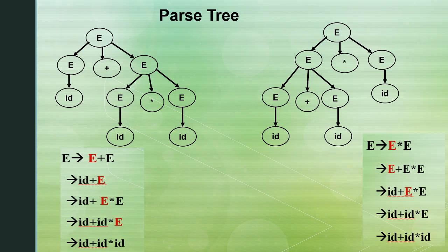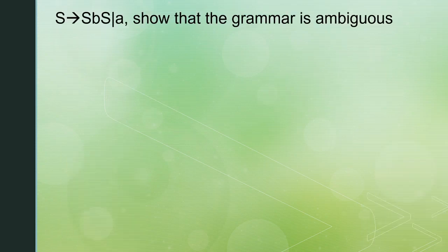Ambiguity in grammar — this is a typical example. What is ambiguous grammar? It is a grammar that has two or more parse trees or two derivations for the same string. Let's take another example. Let's consider the grammar: S gives S B S or A.